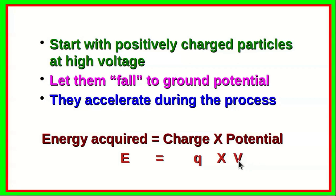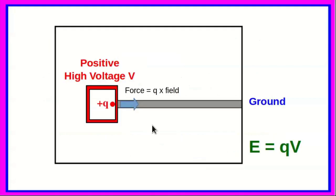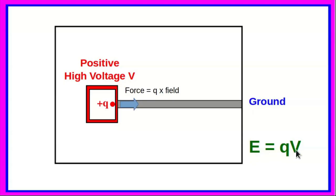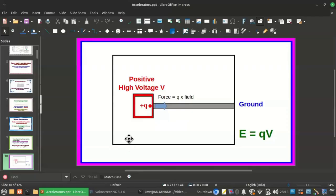A schematic illustrates this acceleration: we have a positive high-voltage terminal at voltage V, a charged particle with positive charge Q situated just on the periphery of this terminal, and a ground potential enclosure. An electric field runs from the high-voltage terminal to the ground potential point, and the particles are accelerated in this field. The force is Q times the field, and the final energy achieved equals Q times V. An animation demonstrates the acceleration process.